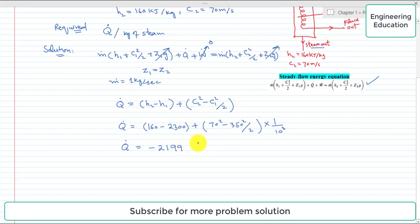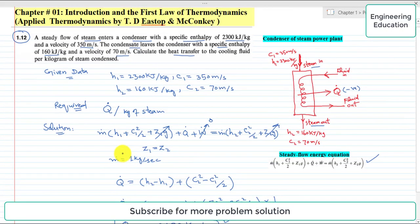The answer will be in kilojoules. Q̇ is equal to, simplifying the values, we get -2199 kilojoules per kilogram. This minus sign shows that this heat is rejected from the system, or it is output from the system and rejected to the atmosphere from the condenser to the cooling water.